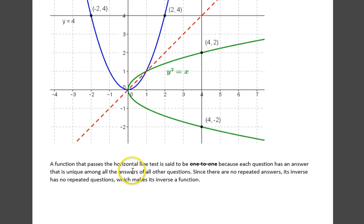A function that passes the horizontal line test is called one-to-one, because each question has an answer that is unique among all the answers of all other questions. Since there are no repeated answers, its inverse has no repeated questions, which makes its inverse a function.